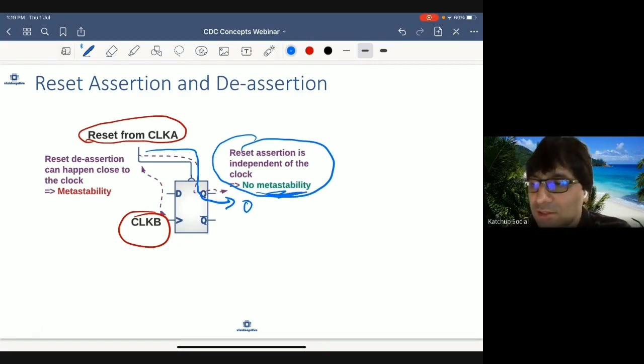But when the de-assertion happens, that means rather than this arc, value from D will be taken. And if that happens very close to clock edge, it can cause metastability.